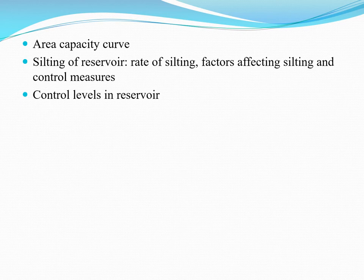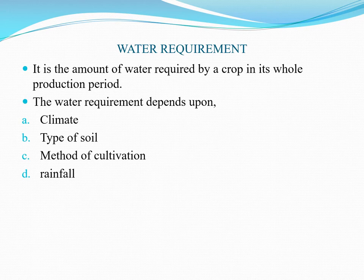Let's start from the first topic: water requirement. Water requirement is the amount of water required by a crop in its whole production period. Different crops grow in different seasons and each crop requires a different quantity of water. The water requirement covers the full production period from the time the crop is sown till its maturity.